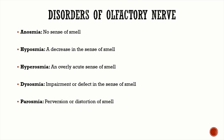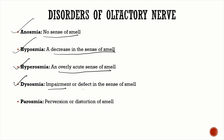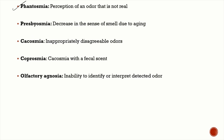The disorders of the olfactory nerve are commonly asked in viva. Anosmia is absence of the sense of smell. Hyposmia is a decrease in the sense of smell. Hyperosmia is an acutely heightened sensitivity to smell. Dysosmia is an impairment or defect in the sense of smell. Parosmia is a perversion or distortion of smell. Phantosmia is when the patient perceives odors that are not actually present — perception of an odor which is not real.